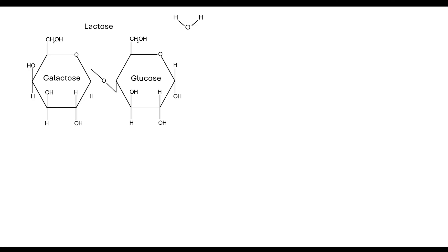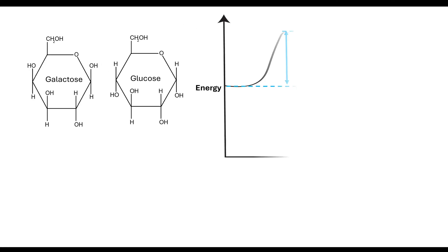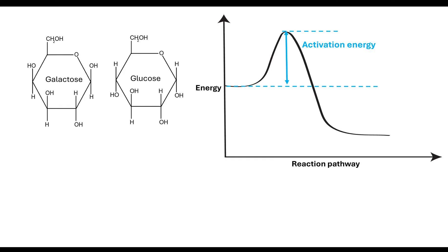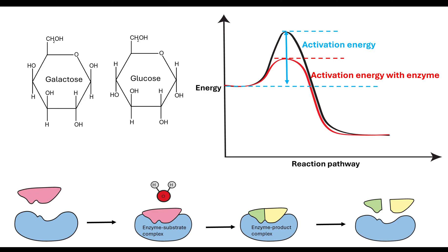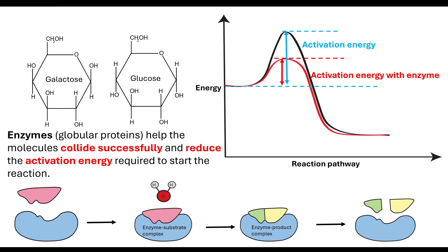Let's just remind ourselves about what happens when substrates collide. If they collide in the correct way with the correct energy, which is known as the activation energy, those reactants can turn into products. In this case, lactose was hydrolyzed down into glucose and galactose. If we now bring in an enzyme, we can lower the activation energy because enzymes are globular proteins. They help molecules collide successfully and reduce the activation energy so the reaction occurs at a faster rate.